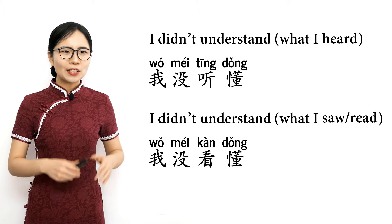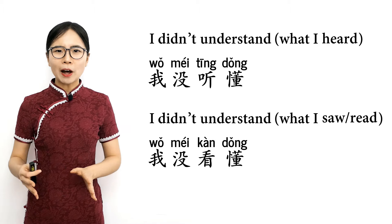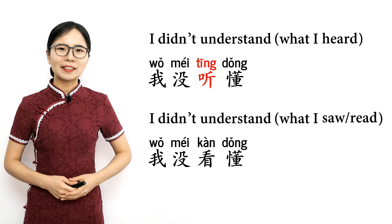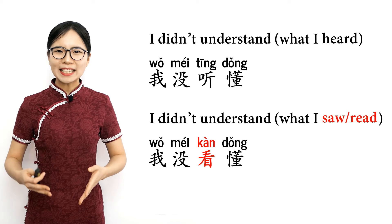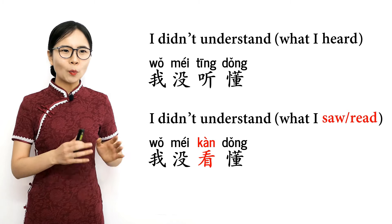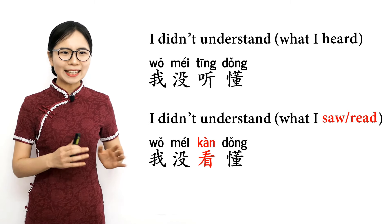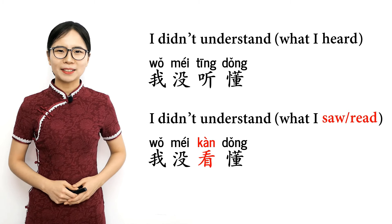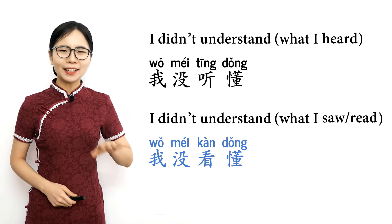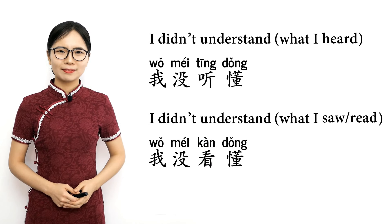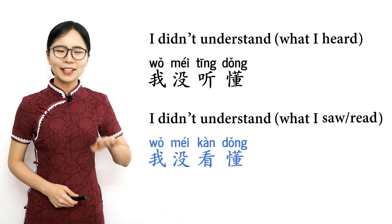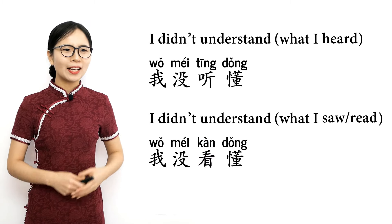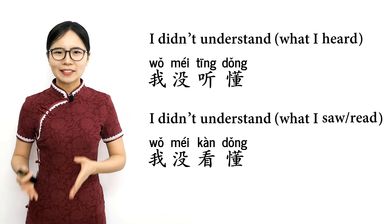In Chinese, we make a distinction between understanding something you heard and understanding something you saw or read. If you want to say you didn't understand something you saw or read, you can replace 听 (listen) with 看 (which means to see or read). So 我没看懂 means 'I didn't understand what I saw or read.' Please repeat after me: 我没看懂, 我没看懂 — I didn't understand what I saw or read.